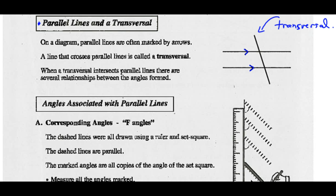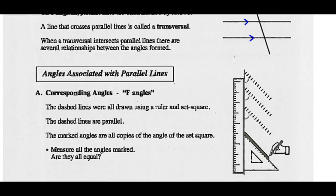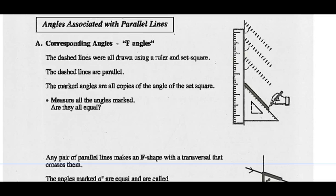When a transversal intersects parallel lines, there are several relationships between the angles that are formed. Angles associated with parallel lines, Part A: corresponding angles, or we call them the F angles or the F pattern. The dashed lines are all drawn using a ruler and a set square, therefore all the dashed lines are parallel. The marked angles are copies of the angle of the set square.